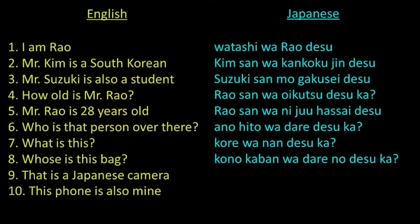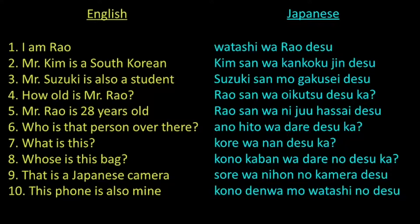Next is sentence number nine. That is Sore. Camera is kamera. Japan is Nihon. And if we use the particle no to connect two nouns, camera and Japan, it will become Nihon no kamera, which means camera belonging to Japan — that is, camera from Japan or made in Japan. So the translation will be: Sore wa Nihon no kamera desu. Let us go to the last sentence. This phone is Kono denwa. Mine is Watashi no. And also is mo. So the translation will be: Kono denwa mo Watashi no desu.